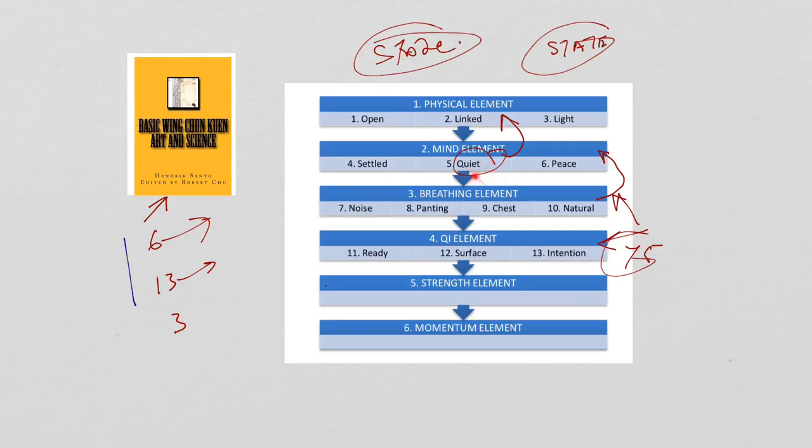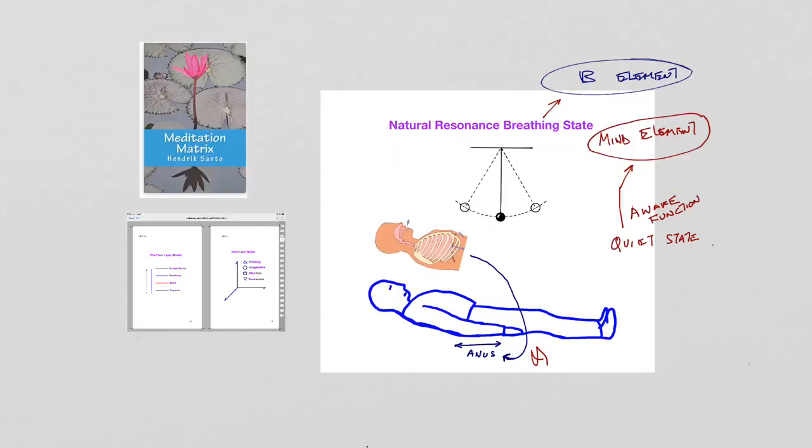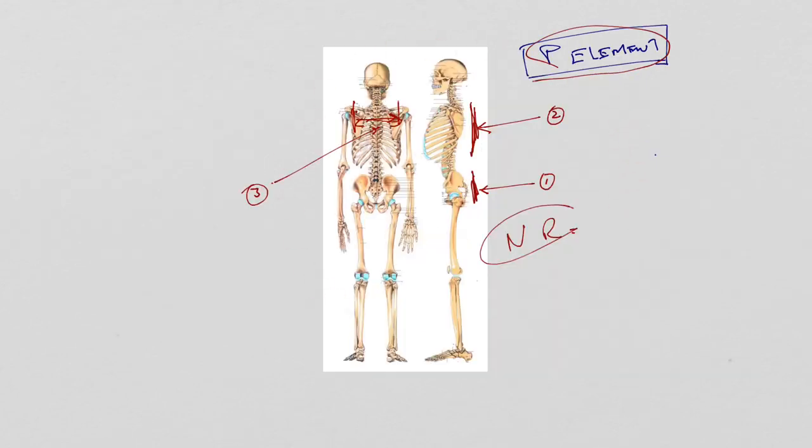And then, in order to do that, you need to go to the physical element. In order to satisfy or implement this natural resonance, you need to have your mind element in the aware functions and quiet state, and you need to handle your physical element. Namely, you need to handle this part of your body, the spine and your shoulder blade. You need to put them in the natural resonance state.